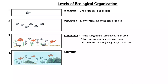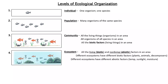Next step: ecosystem. It looks like the same thing as community, but we added rocks, we added water. Those things are not living. So it looks like ecosystem is all the living and non-living things in an area. Different ecosystems have different biotic factors. Like you find cactuses or cacti in deserts — you don't find them in the tundra. You find palm trees in tropical regions.